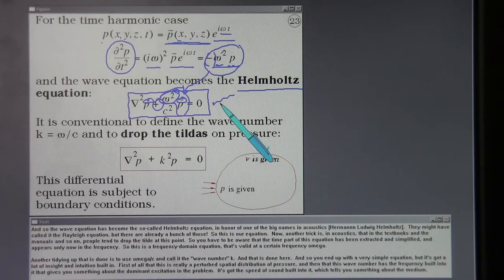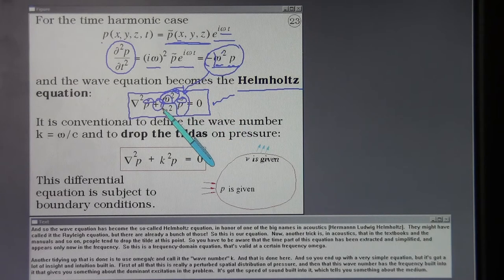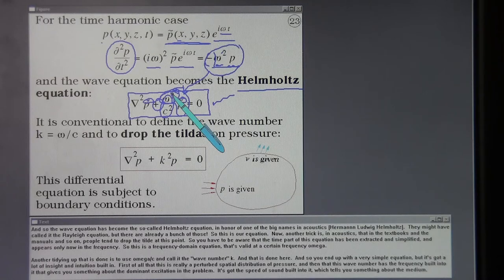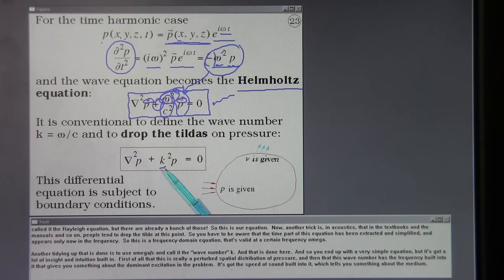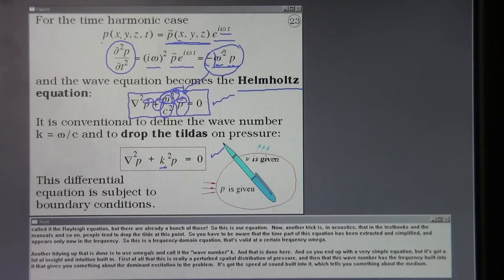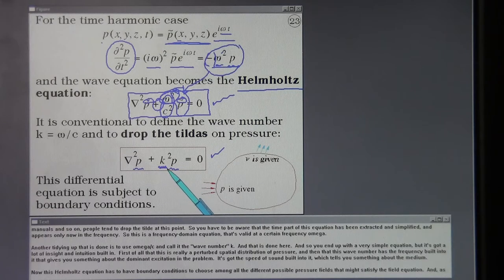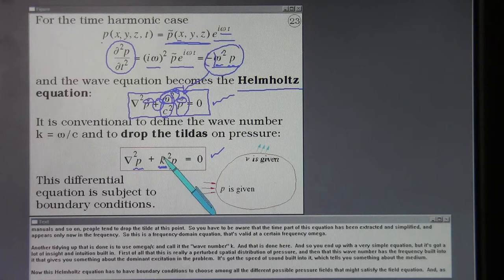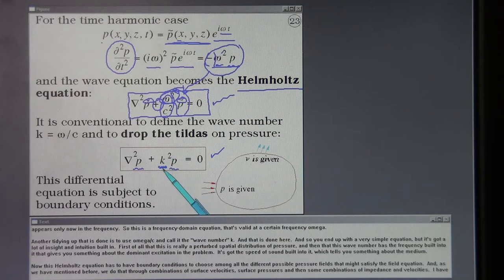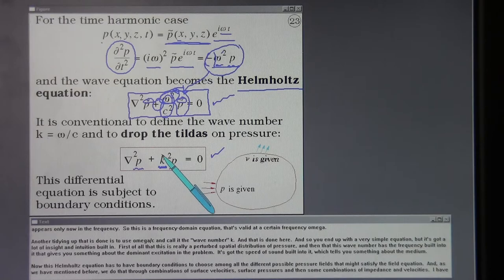Another tidying up that's done is to use omega over c and call it the wave number, k. And that is done here. And so you end up with a very simple equation but it's got a lot of insight and intuition built in. First of all that this is really a perturbed spatial distribution of pressure. And then that this wave number has the frequency built into it that gives you something about the dominant excitation in the problem. It's got the speed of sound built into it which tells you something about the medium.